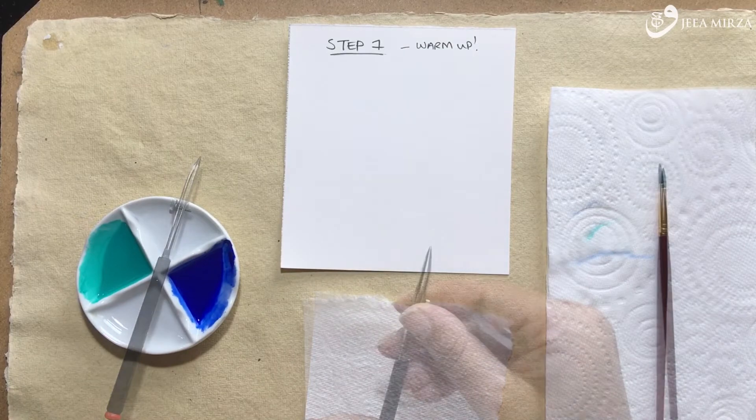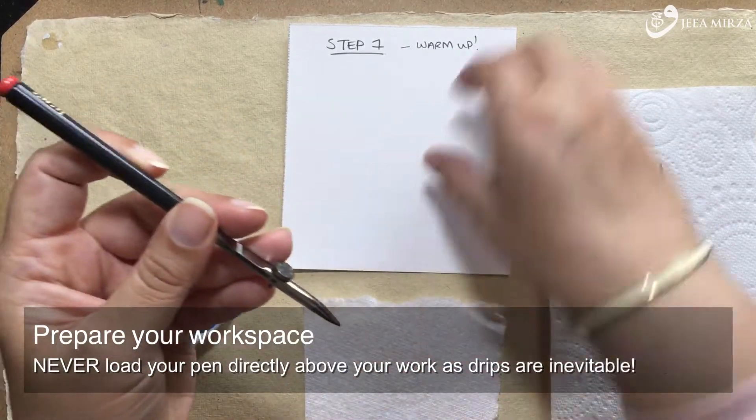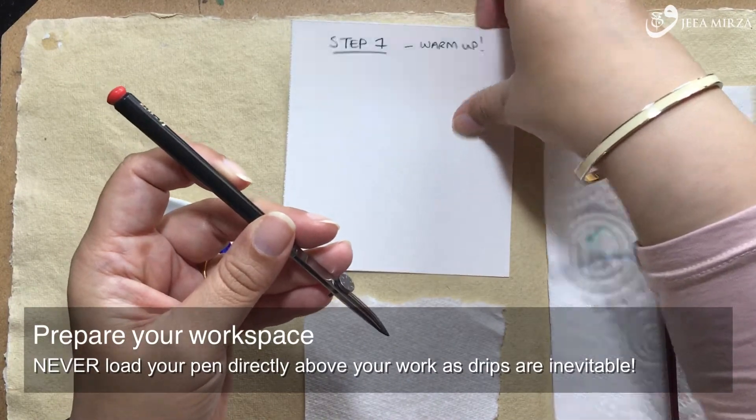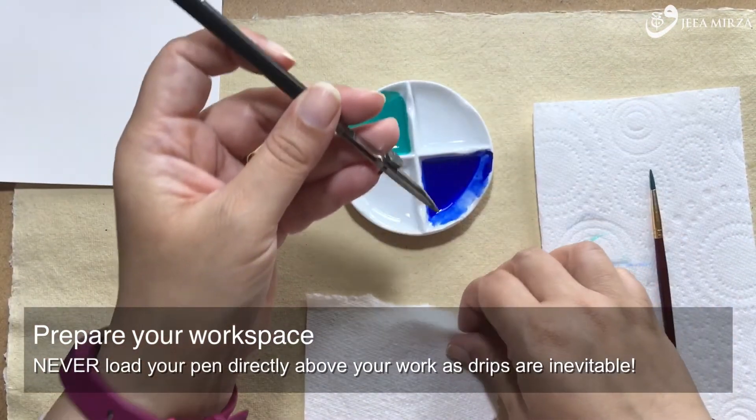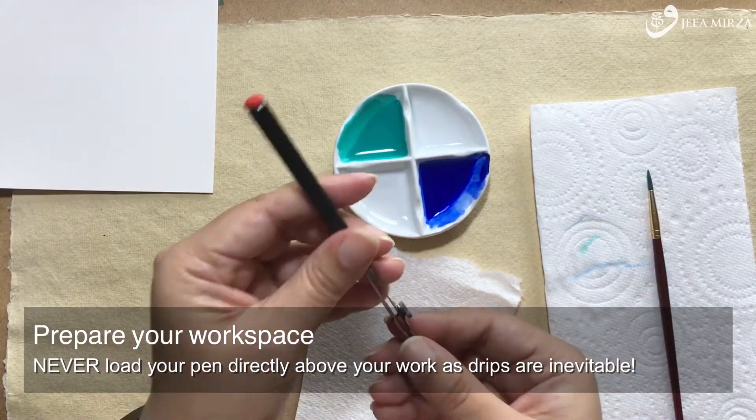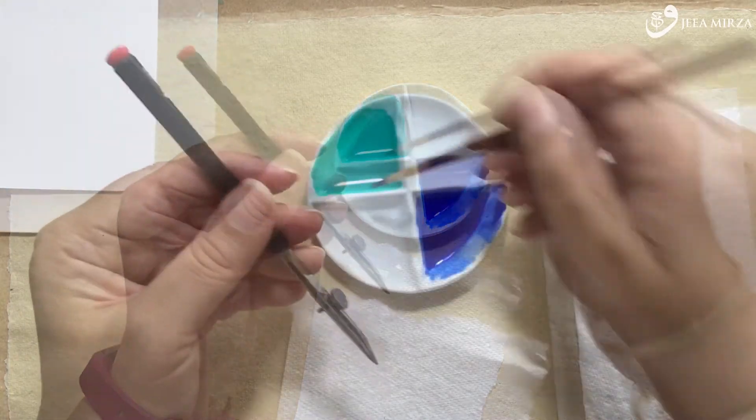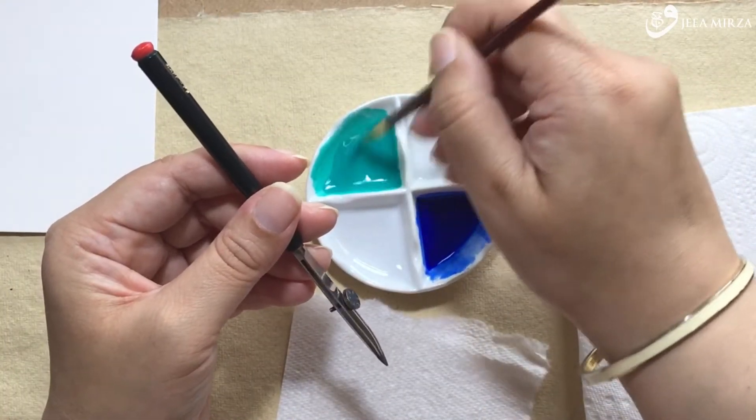Now our paint is ready, we need to prepare our workspace. A few important things to note. We should never fill our ruling pen directly above our work, because spills will happen. It's par for the course. So you should be really, really careful about your space and your environment when you are getting ready to do this.